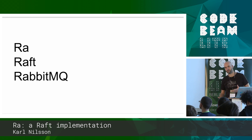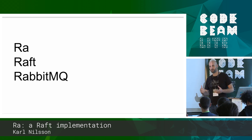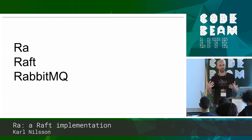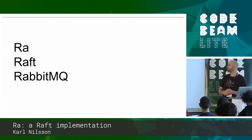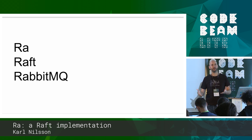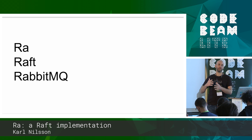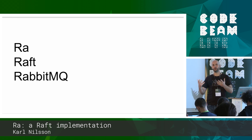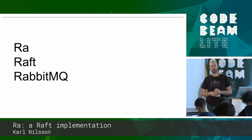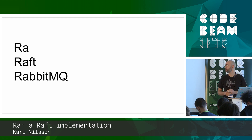This talk is not going to be so much about Raft - we're just going to try to squeeze in as much about Raft, the algorithm, which is a consensus algorithm, and talk more about Ra, the library: what it provides, how you can use it, that kind of thing. We're going to do a demo, then talk a little bit about RabbitMQ, mostly in the context of how it informed some of the design decisions inside Ra and some of the priorities that we assigned to certain things inside Ra.